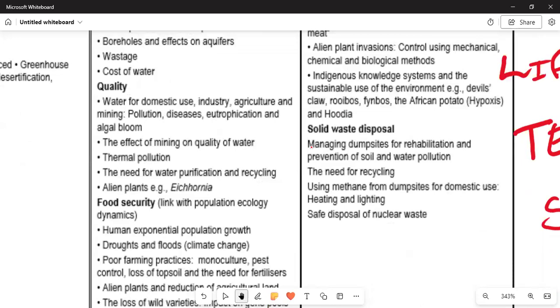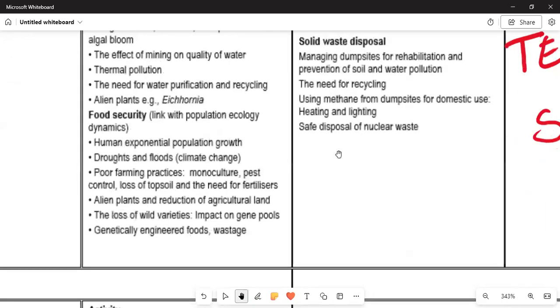Here we've got to understand human expansion and growth. We talk about droughts and floods, poor farming practices which is known as monoculture, pest control and loss of topsoil, the need for fertilizers, alien plants, reduction of agricultural land, loss of crop varieties, impact on gene pools, genetically engineered food, and waste management. Those concepts are on our playlist - you can revise them.